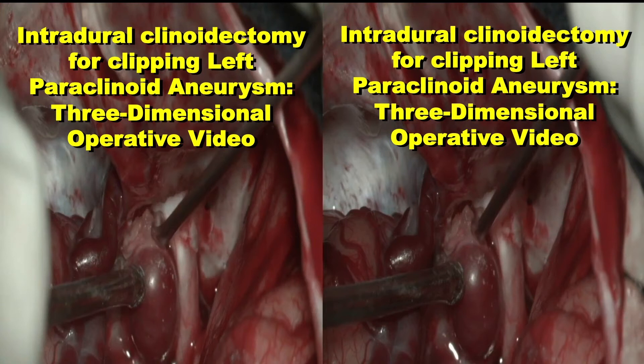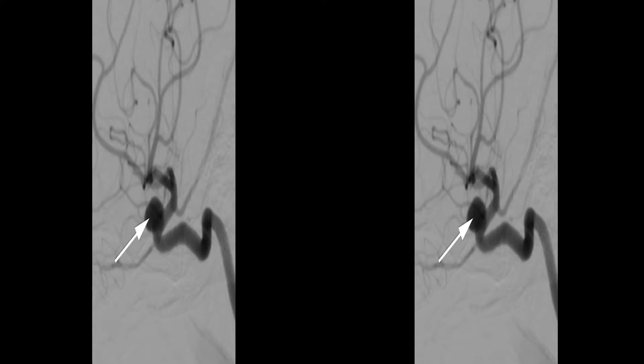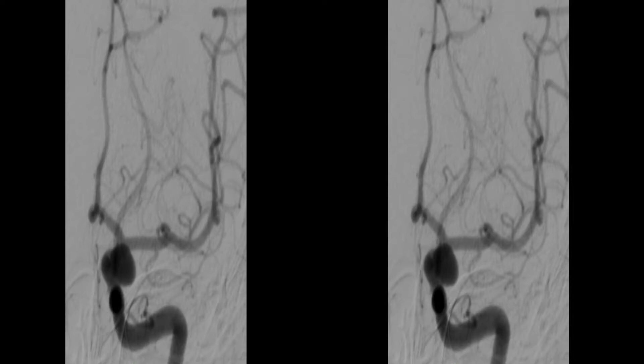Paraclinoid aneurysms represent a true microsurgical challenge for resolution due to the proximity with neurovascular structures of the skull base. We present a case of a 42-year-old woman with headaches, detecting a paraclinoid aneurysm on angiography. In this lateral and anteroposterior angiographic view of the left carotid artery, the paraclinoid aneurysm can be seen highlighted with a white arrow.